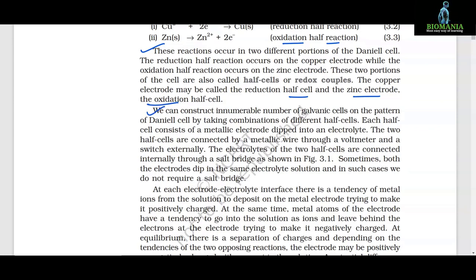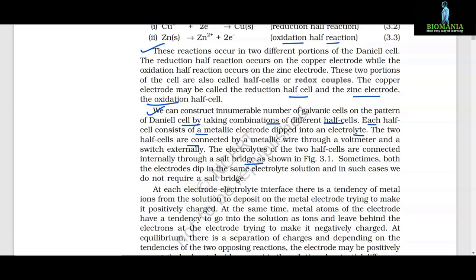The copper electrode may be called the reduction half cell and zinc electrode the oxidation half cell. We can construct innumerable number of galvanic cells on the pattern of Daniel's cell by taking combinations of different half cells. Each half cell consists of a metallic electrode dipped into an electrolyte. The two half cells are connected by a metallic wire through a voltmeter and a switch externally. The electrolytes of the two half cells are connected internally through a salt bridge. Sometimes both electrodes dip in the same electrolyte solution and in such cases we do not require a salt bridge.